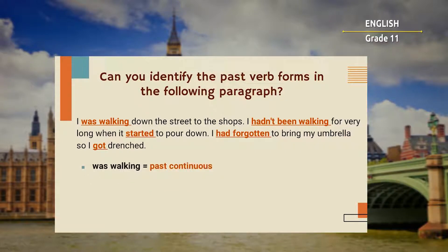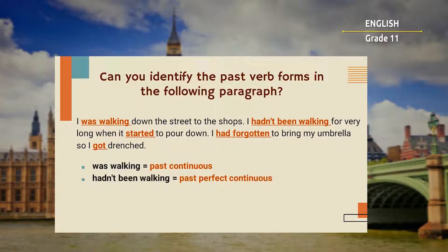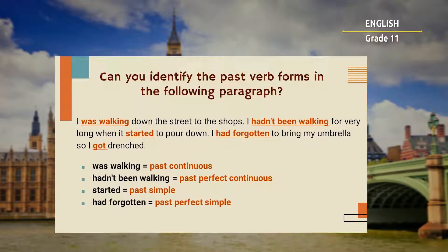Let's see. 'Was walking' — it is past continuous. 'Hadn't been walking' — past perfect continuous. 'Started' — past simple. 'Had forgotten' — past perfect simple. 'Got' — past simple.